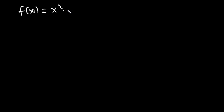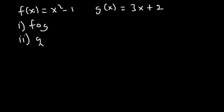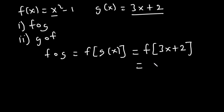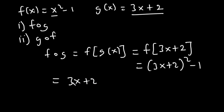Let's try another example. Given f(x) = x² - 1 and g(x) = 3x + 2, let's find f(g(x)) and g(f(x)). To find f(g(x)), it's f(g(x)) where g(x) = 3x + 2. We replace x with 3x + 2, giving (3x + 2)² - 1.